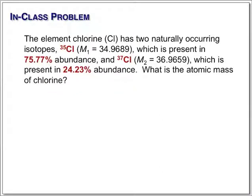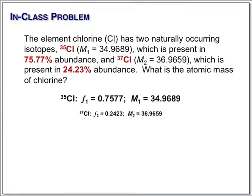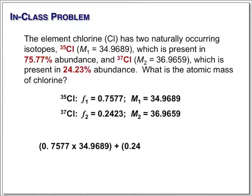Again, we want to take the natural abundance, convert it to a fraction. The calculation is simply the fraction times the exact mass, and we add these together. For chlorine, the average atomic mass is 35.45.